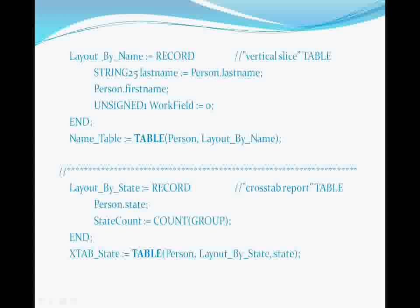In this example, the name table is defined as a table of records derived from the person dataset that will only use the first and last name fields from that dataset, and will add a work field for use in subsequent operations. This is a vertical slice table, which creates a vertical slice of just the columns you're interested in working with from the dataset. The number of records in the resulting table is exactly equal to the number of input records in the dataset from which it is derived.